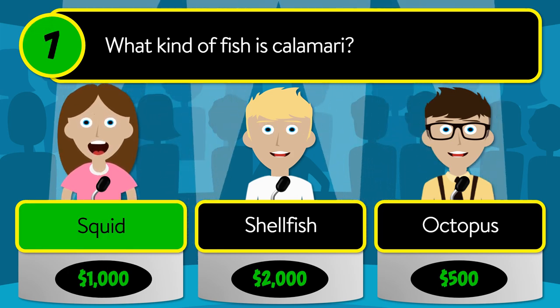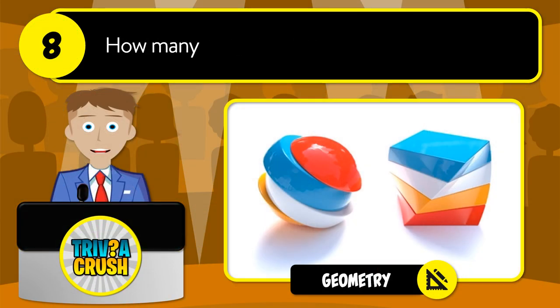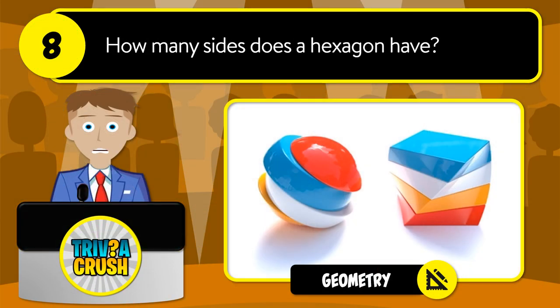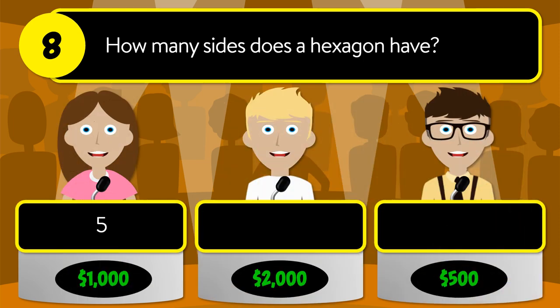Question number seven: what kind of fish is calamari? Is it squid, shellfish, or octopus? The correct answer is squid.